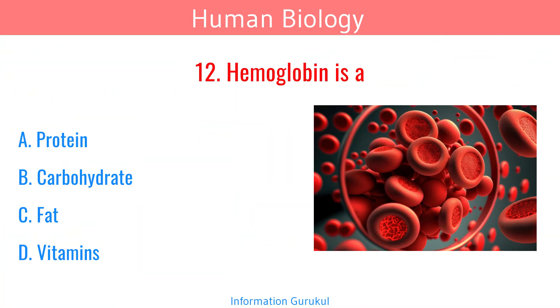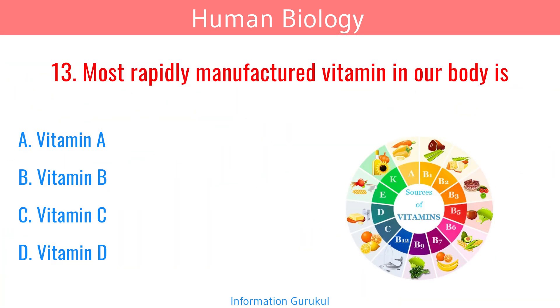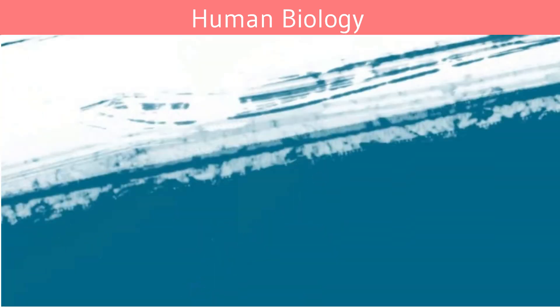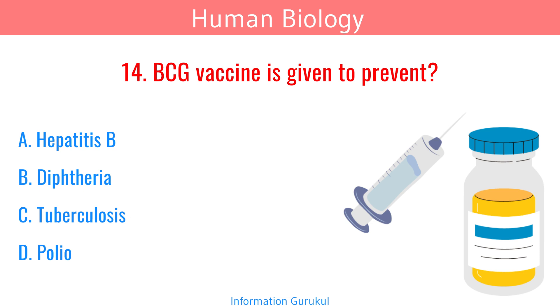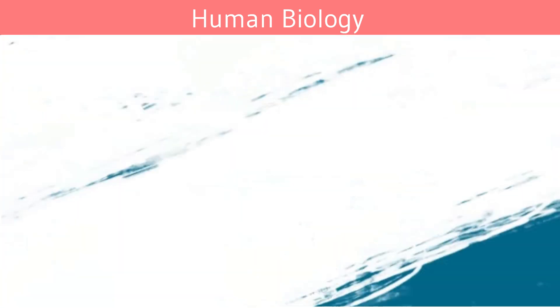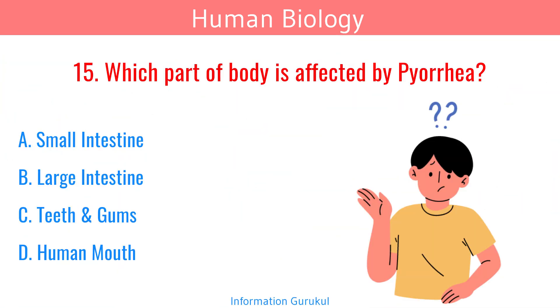Hemoglobin is a protein. The most rapidly manufactured vitamin in our body is Vitamin D. BCG vaccine is given to prevent tuberculosis. Which part of the body is affected by pyoria? Teeth and gums.